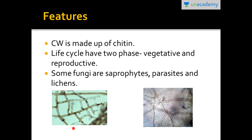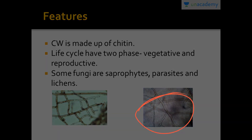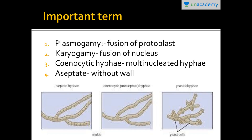Here is a diagram showing fungal mycelium types. This is septate mycelium where a wall is present between cells, and this is aseptate mycelium where no wall is present between the cells. These important structural differences help classify fungi into their respective classes.